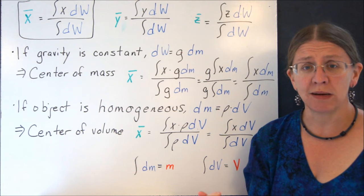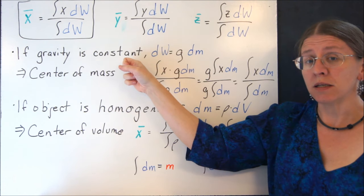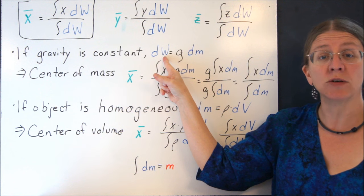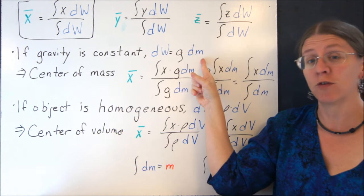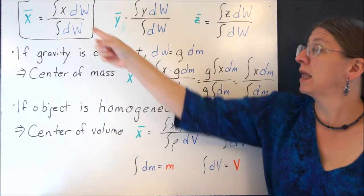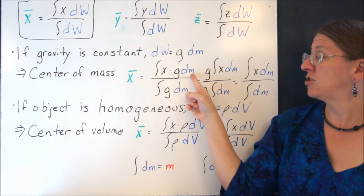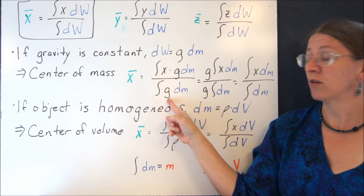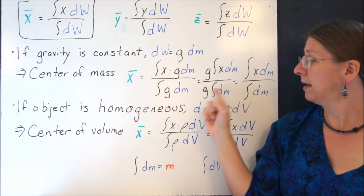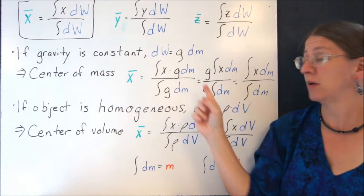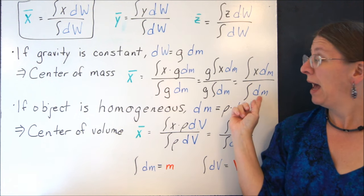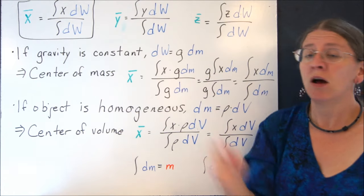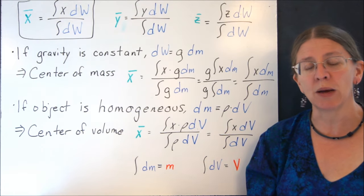And all the rest of them are all the same too. So if gravity is constant, then each little individual bit of differential weight is actually gravity times some individual bit of differential mass. So if I plug that into the formula I have here, x is gdm, x times gdm over the integral of gdm. Well, I can pull my g's out because I just said gravity was constant and cancel them. And now I have x-bar as the integral of xdm over the integral dm, which varies from this only in that my W has become an m.